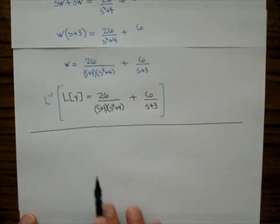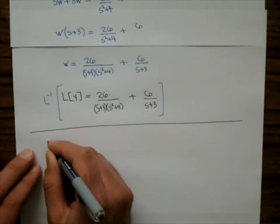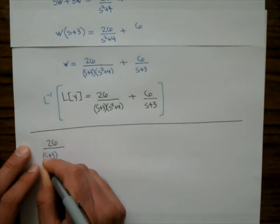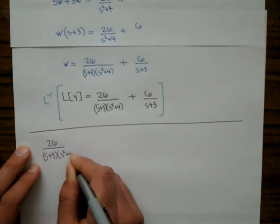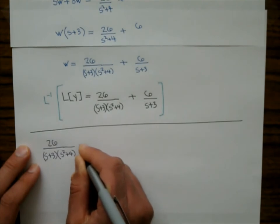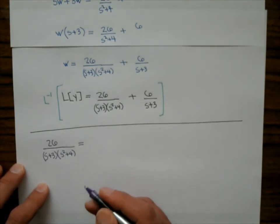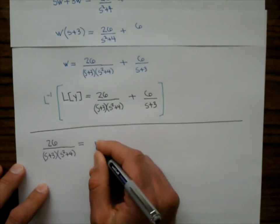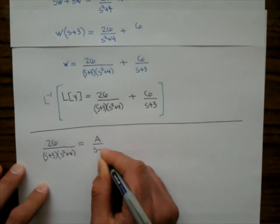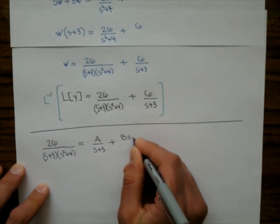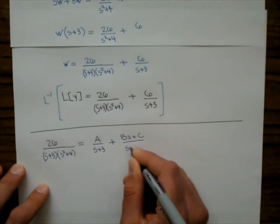So I'll do my partial fraction decomposition in purple. I have 26 over (s + 3)(s squared + 4). The partial fraction decomposition happens only when finding the inverse Laplace transform, not the forward transform. I have a linear factor, so that gives A over (s + 3), plus a quadratic factor, so that gives (Bs + C) over (s squared + 4).